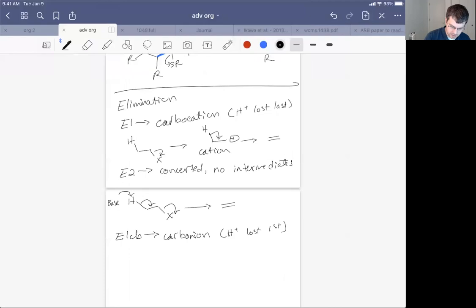That's actually different from the E1CB reaction, where the H plus is lost first by the base to give us negative charge at this position, which then kicks off the leaving group second. So it's just flipping the steps around from the E1 reaction. We call it the E1CB.